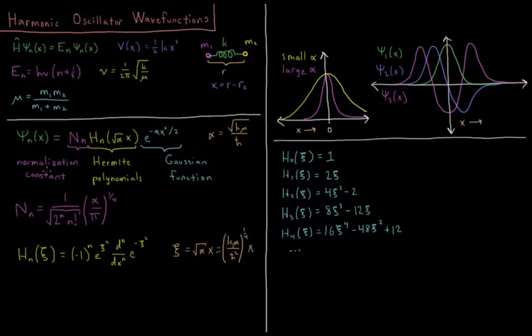So they have three parts. First we have the normalization constant. Then we have a value called a Hermite polynomial. And then we have a part called a Gaussian function. So in two out of the three of these, you'll notice a quantity alpha showing up. Alpha equals the square root of the spring constant times the reduced mass over Planck's constant, h bar. So alpha equals square root of k mu over h bar.